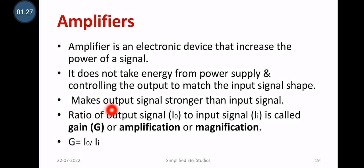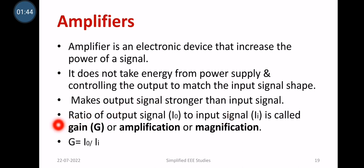The ratio of the output signal to the input signal is generally called gain, denoted by the capital letter G. Gain is also known as the amplification factor or magnification factor. Mathematically, G = I₀ / Iᵢ. These are the basic introductions to amplifiers; an amplifier can be categorized as one of the signal conditioning devices.